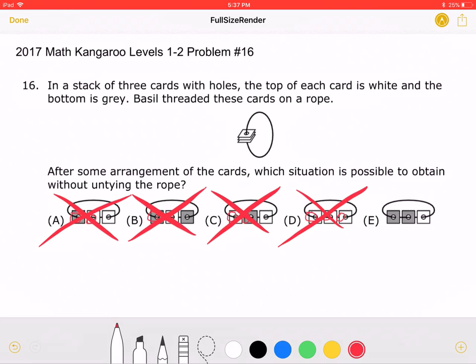Now let's look at answer choice E. The rope goes over and over on the gray and under on the white. This is correct. So the answer is E. Thank you so much for watching and please subscribe and comment.